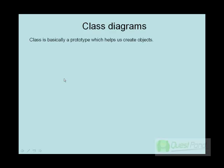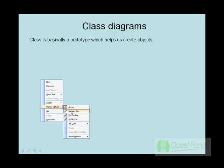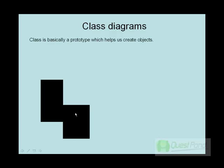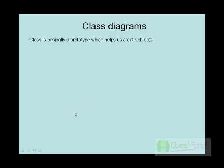Class diagrams basically form one of the very basic entities for technical documents. Some of the diagrams are compulsory and very much needed to describe any technical architecture. Like one of the diagrams we discussed previously was a use case diagram, which is a building block to gather requirements. In the same way, class diagrams are very useful to understand the static part of a project.